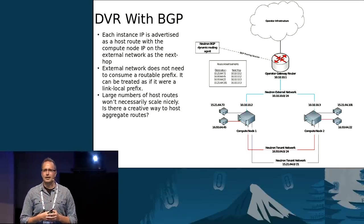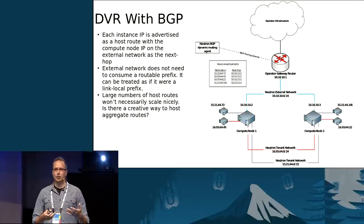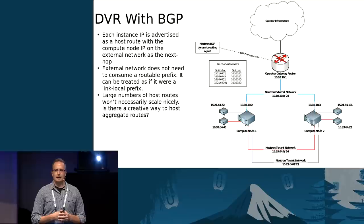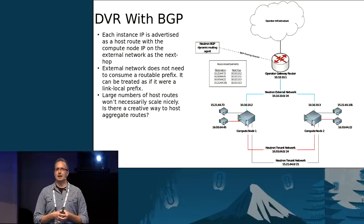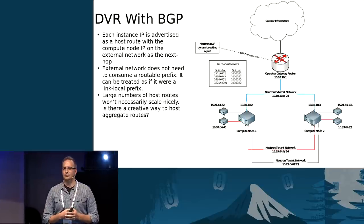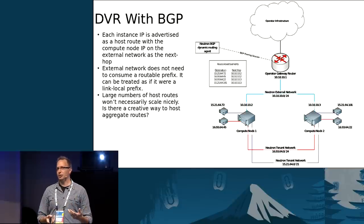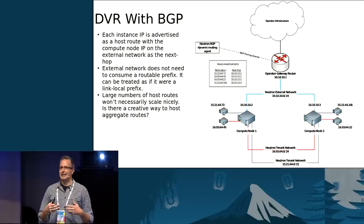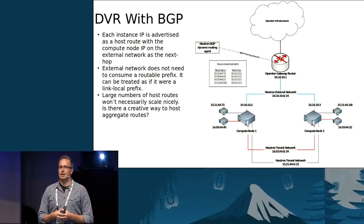In this example we have two compute nodes, two tenant networks on the back end and an external network on the front end, with two instances on each tenant network. With the addition of BGP, we can speak into the protocol with host routes for each of those instances, producing a routing table like shown in the diagram. One of the challenges with this is scalability — you're publishing a host route for every port, and that upstream router needs a routing table capable of handling the scale you want to run at. There may be some creative ways to mitigate that, and we're looking at those as we go forward in development.